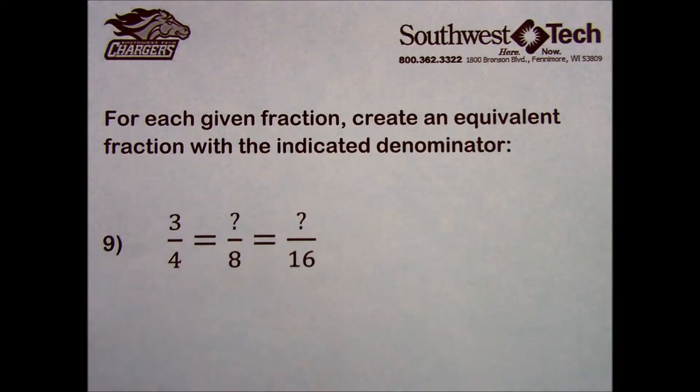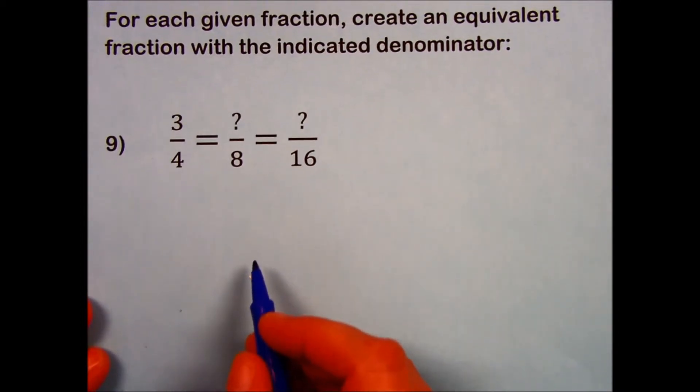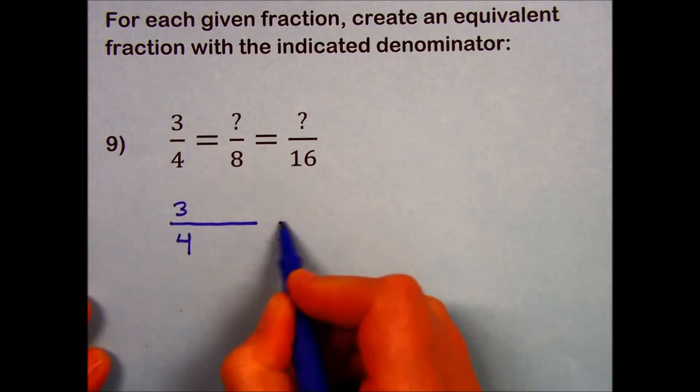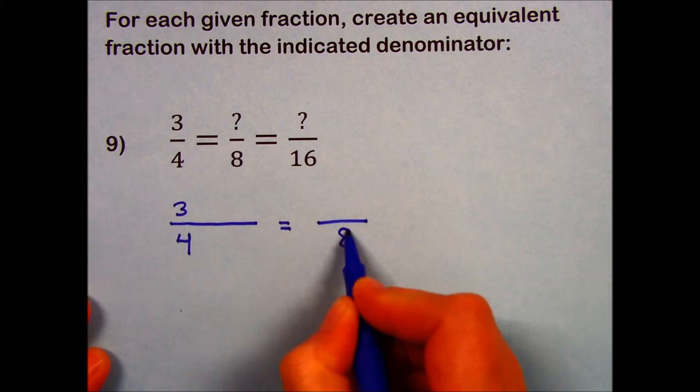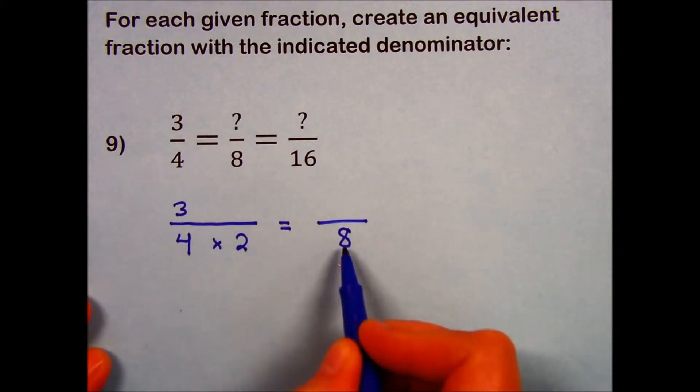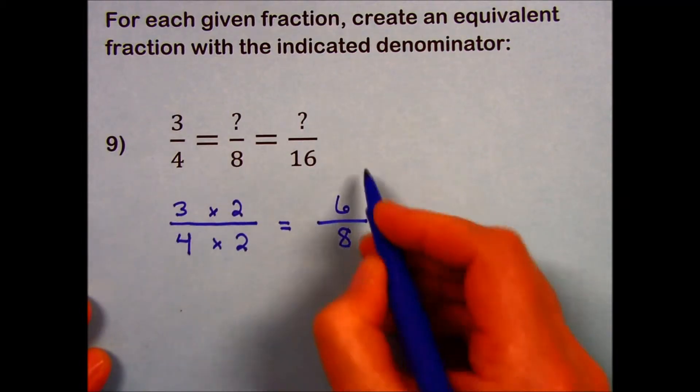Let's break this into part A and part B, basically. I will start by writing 3/4 with extra space. 4 times 2 gives me a denominator of 8. Do the same thing in the numerator. 3 times 2 is 6.